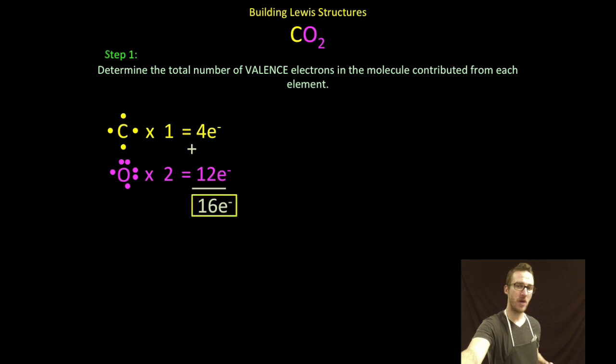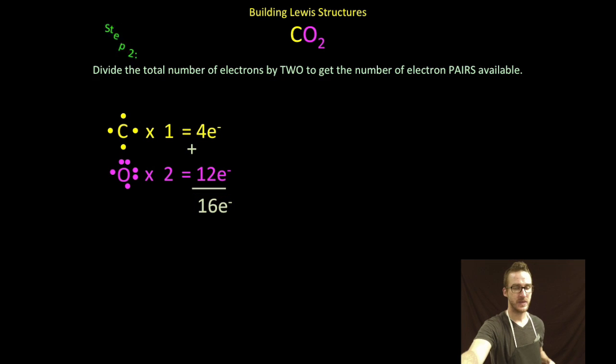In total for the molecule, I simply add my valence electrons coming from carbon and my valence electrons coming from oxygen: 16 total valence electrons. Step two, divide my total number of electrons by two to get the number of electron pairs available. In this case, eight pairs of valence electrons available.